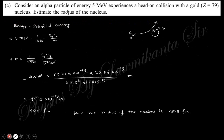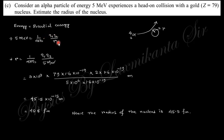The next part considers an alpha particle of given energy incident on gold, and asks to estimate the radius of the nucleus. At the closest approach, all kinetic energy is converted into potential energy. Setting kinetic energy equal to potential energy — (1/4πε₀)·q₁q₂/r — and solving for r, we obtain r = 45.5 femtometers.